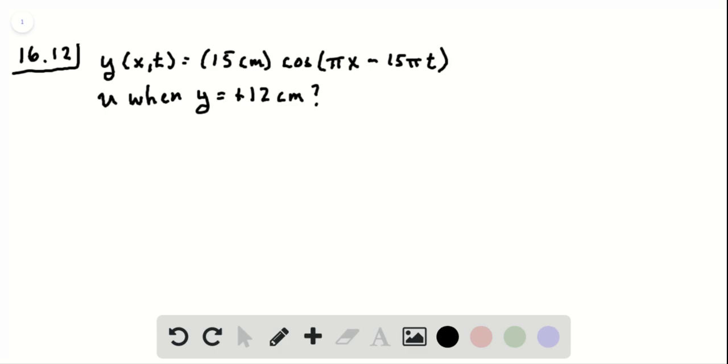We somehow have to get rid of x and t so that all we're left with is y, and then we can put in our numbers and get the result we're looking for. But first things first, we know that the transverse speed is just the time derivative of the displacement.